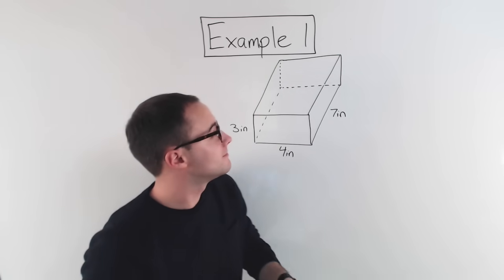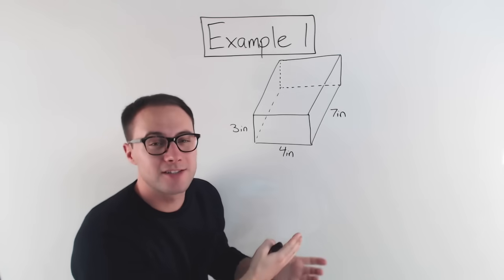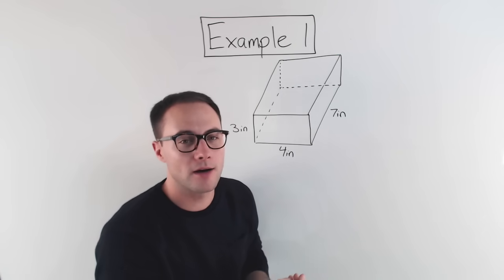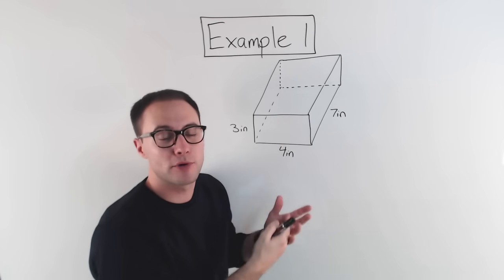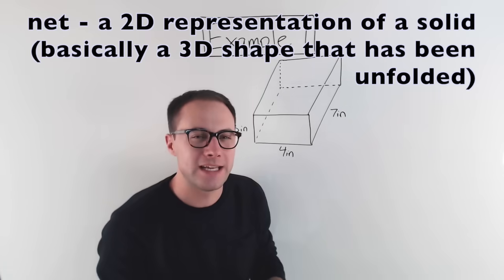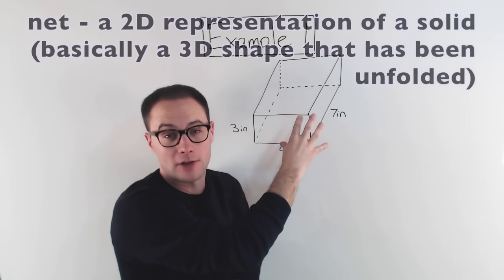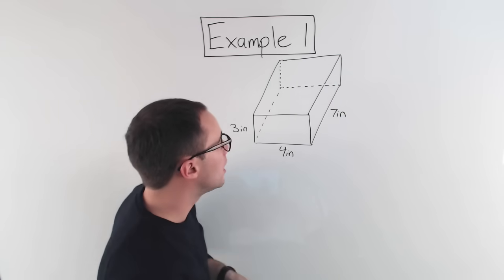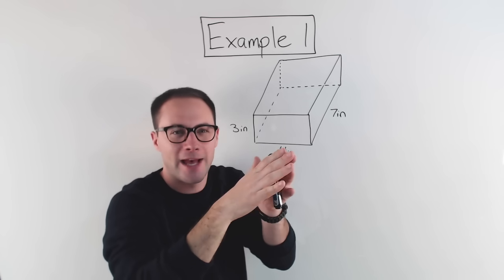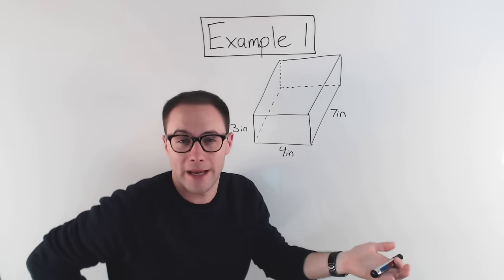Example 1: let's find the surface area of this rectangular prism. To start off, I'm going to show you how to find the surface area using a net. A net is just a 2D, two-dimensional representation of a 3D solid. Basically, we're going to cut this and unfold it — that's what you're doing to make a net.